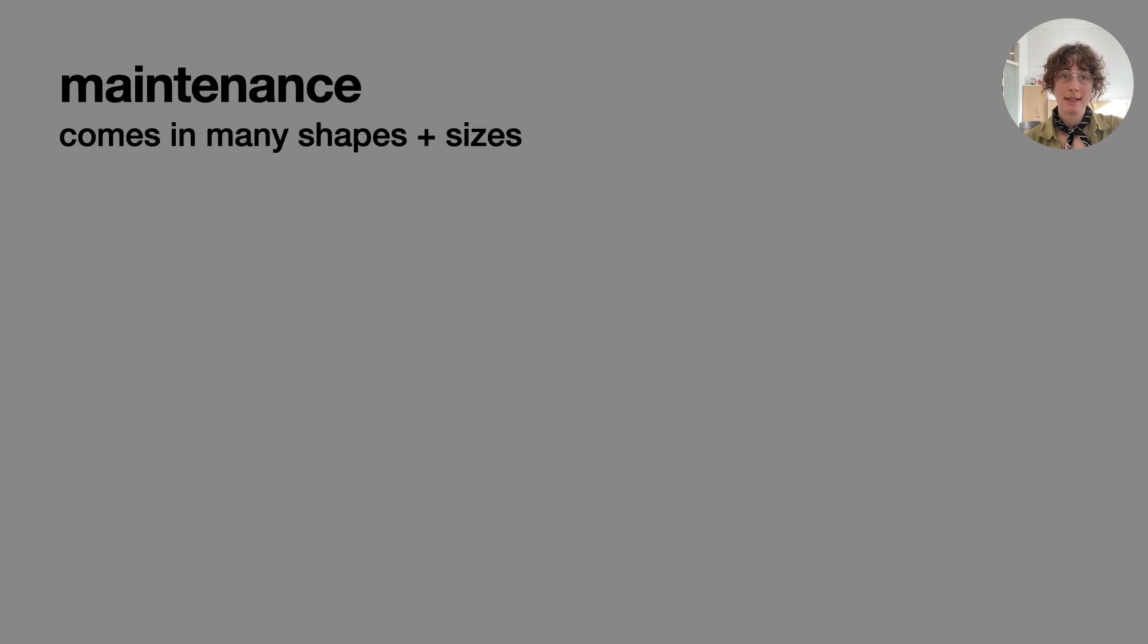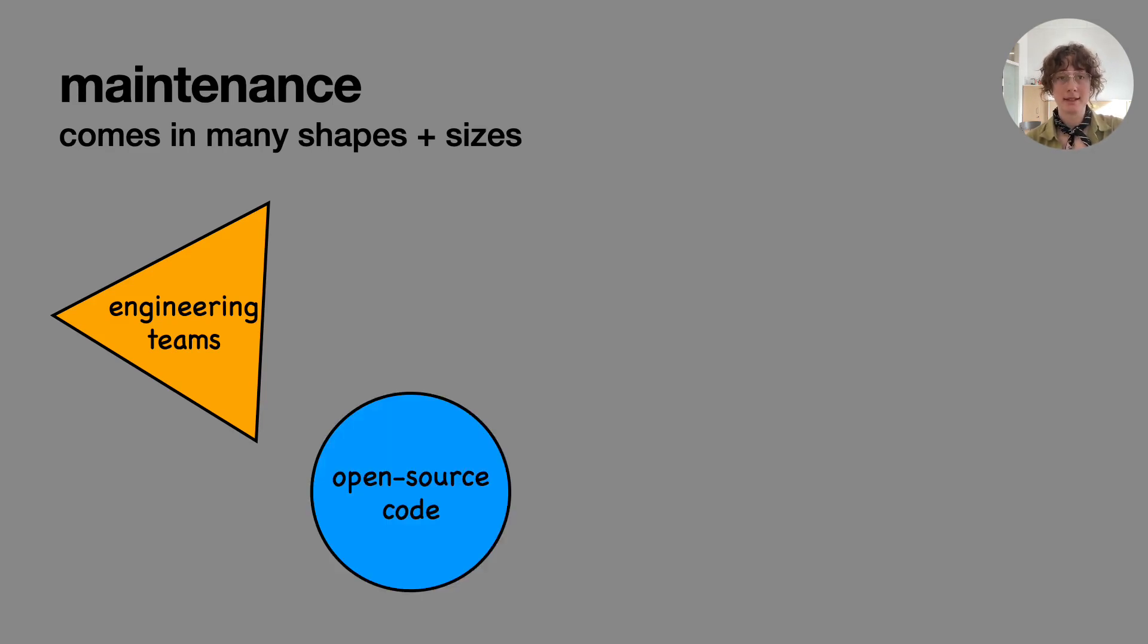For example, maintenance showed up in different shapes and sizes. In some instances, there were engineering teams that took student prototypes and built them out further. In other instances, projects were put on GitHub as open source code. And then there were some instances where the students took on the responsibility to maintain the visualization tool, even after graduating from their PhD. In these instances, the graduate students cited personal relationships with their collaborators as the reason why they wouldn't abandon the project.